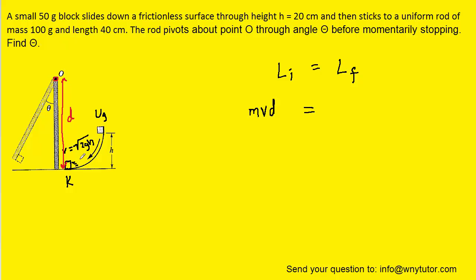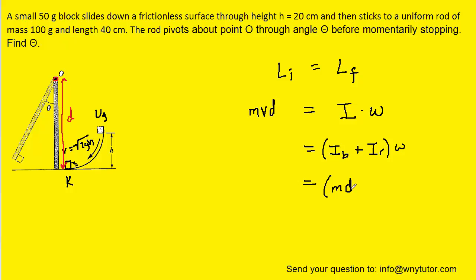Once the block collides with the rod and sticks to it, the two objects together are going to start to rotate in a circular fashion. So on the final side for the final angular momentum, we would have the rotational inertia of the two objects stuck together multiplied by the angular velocity. We're going to expand the rotational inertia to include the rotational inertia of the block plus the rotational inertia of the rod. The block, being a particle, would have a rotational inertia equal to mass times distance squared. For the rod it's a bit more complicated, so for now we'll put a question mark there.